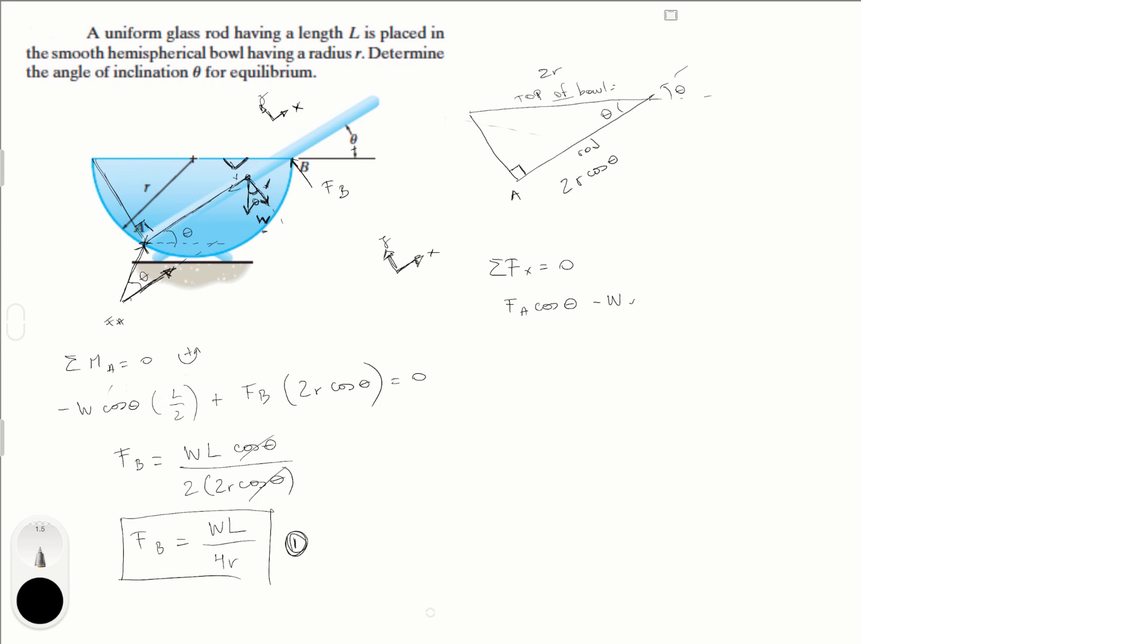minus the weight times sine of theta, which is this component of the weight right here, is equal to zero. Now F of B is going straight up in our X and Y axis, so it has no X component.